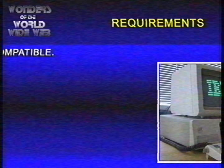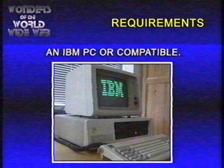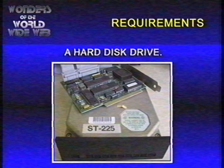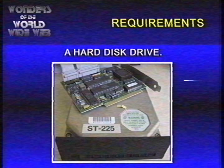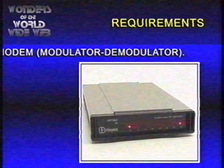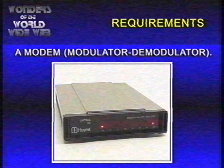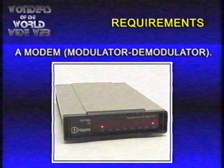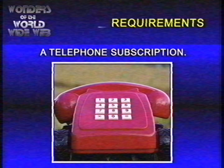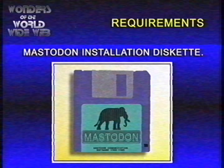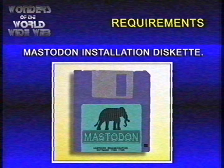For Mastodon, you'll need an IBM personal computer or compatible computer, a hard disk drive, a modem — also known as modulator-demodulator — a telephone subscription, and the Mastodon installation diskette.